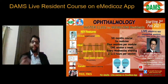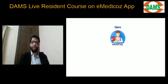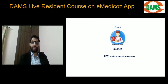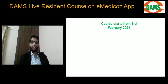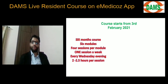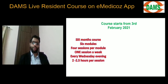The course is designed for six months duration. If you want to apply, you can go to the eMedico app, go to the courses section — there is live teaching for resident courses and you will find the ophthalmology resident course. It starts from 3rd February 2021. There are six months and six modules; four sessions are in one module, and one session every Wednesday evening for two to two and a half hours per session.